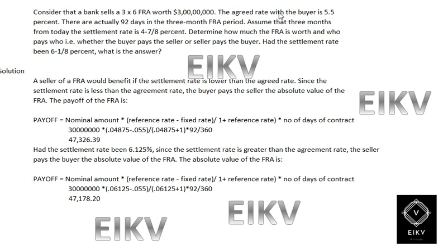In this question, the agreed rate is 5.5% and the settlement rate is 4.875%, so the agreed rate is higher than the settlement rate. The payoff formula is: nominal amount into (reference rate minus fixed rate) divided by (1 plus reference rate into number of days of contract). This gives us 30 million into (0.04875 minus 0.055) divided by (1 plus 0.04875) multiplied by 92 divided by 360.